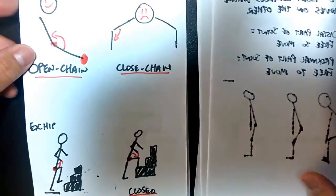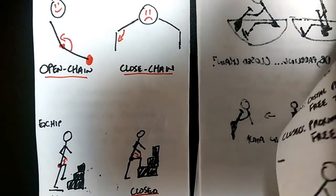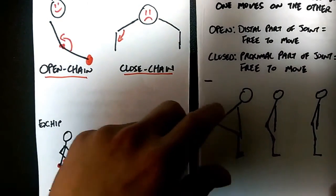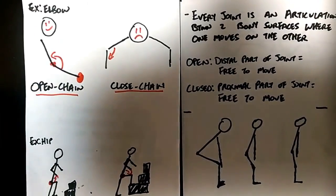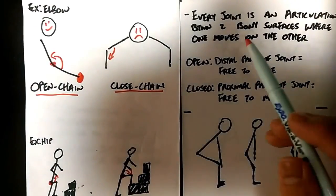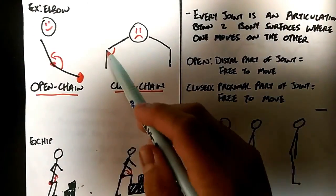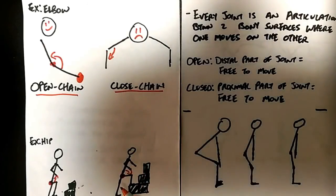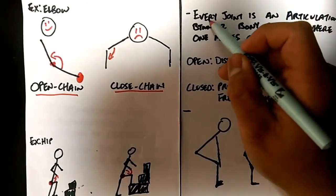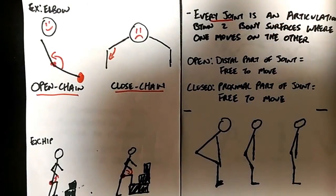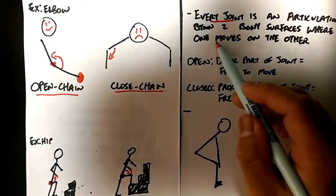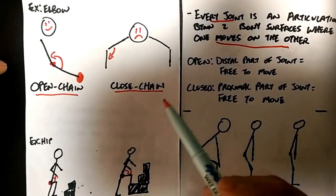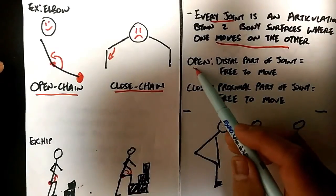Here are some basics that you have to understand. Every joint, so elbow joint, shoulder joint, hip joint, ankle, whatever. Every joint is an articulation between two bony surfaces where one moves on the other.